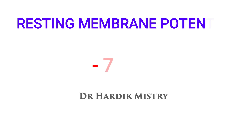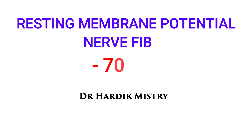So many students are confused about which value to consider: minus 90 millivolts from Guyton, or minus 70 millivolts from all other textbooks. I conclude — and I am not saying Guyton's value is wrong — but from my point of view, minus 70 millivolts should be considered as the resting membrane potential of the nerve fiber, and minus 90 millivolts is the resting membrane potential of the muscle fiber.